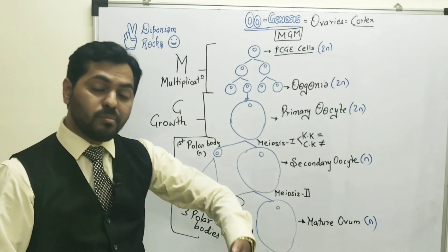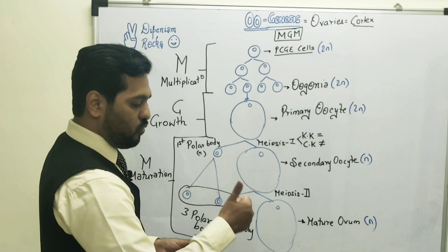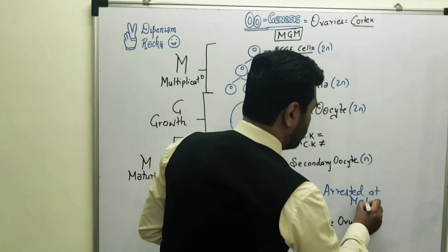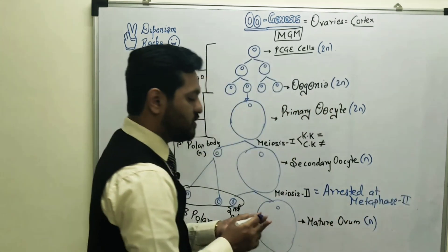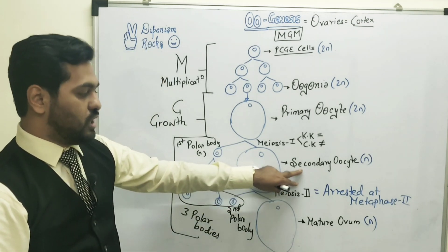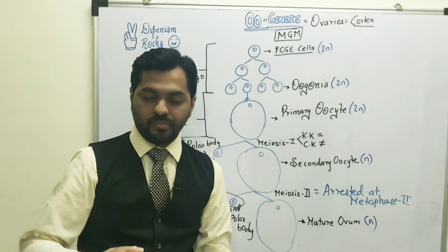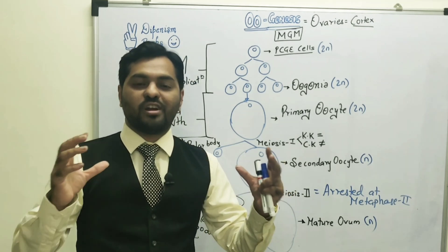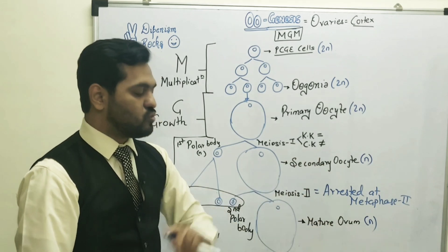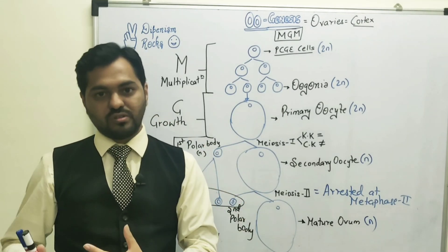Also remember that when the secondary oocyte enters meiosis 2 — going through prophase 2 and metaphase 2 — the process gets arrested at metaphase 2. It will only proceed when a sperm cell donates its centriole to this secondary oocyte. So in females, a mature ovum is never formed on its own; it only forms when fertilization is initiated and the sperm provides the centriole to complete meiosis 2.